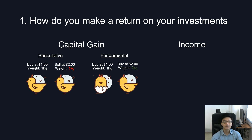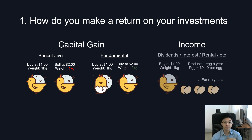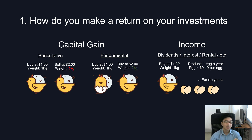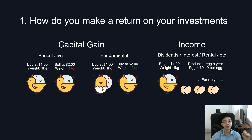The second source of returns can come from income that we receive from our investments. In the context of stocks, we call them dividends. In the context of bonds, we call them interest. In the context of property, we call them rental income. Essentially, income returns are the additional output produced by our investments.